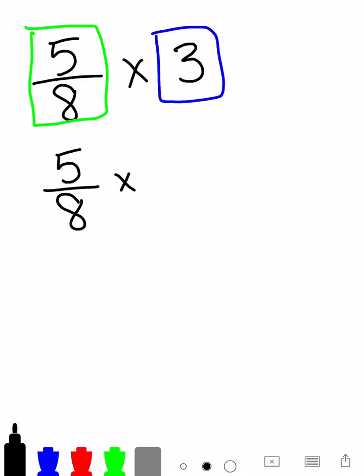Obviously we're multiplying. That's the operation that we're doing. And then 3 being our whole number, to make that into a fraction, we would put a 1 underneath it. So it would just be 3 over 1.